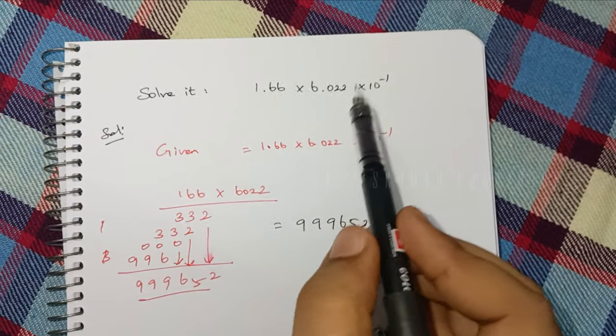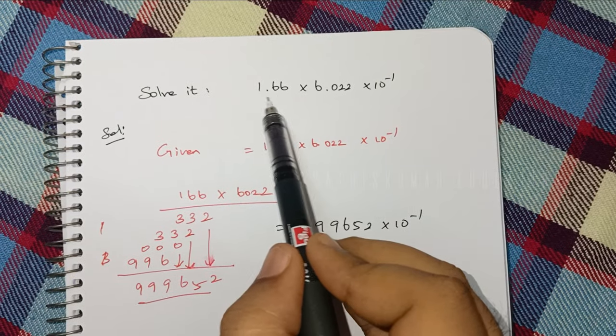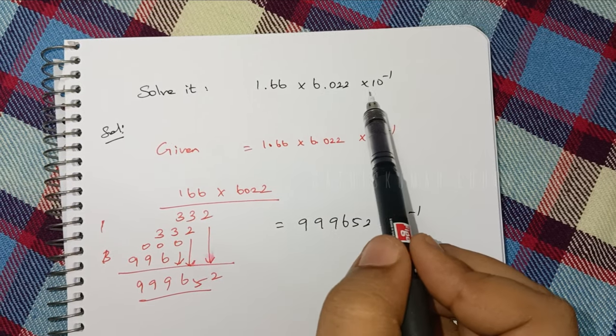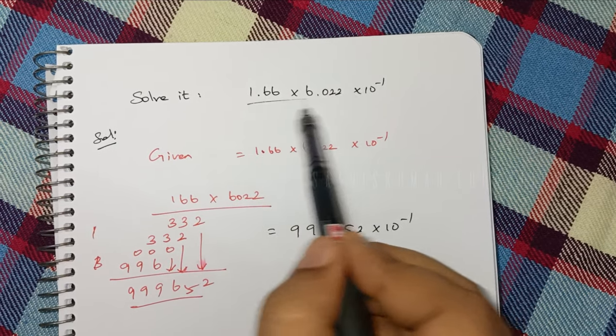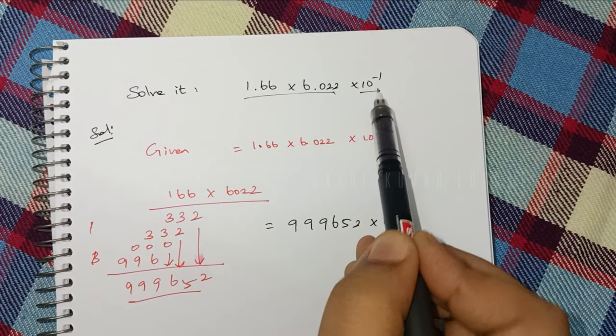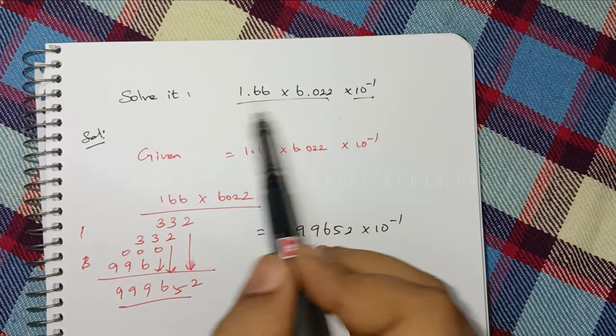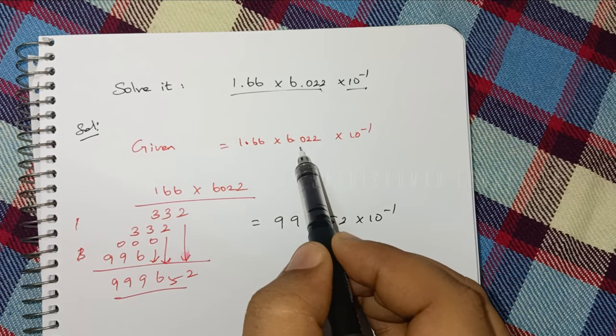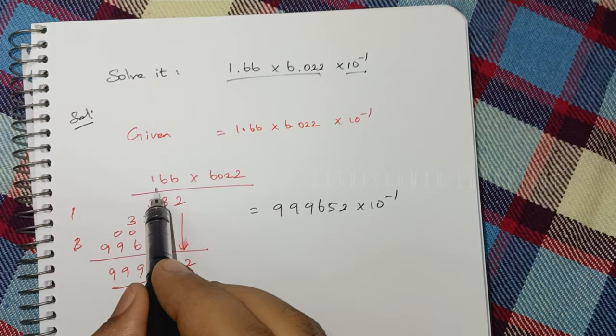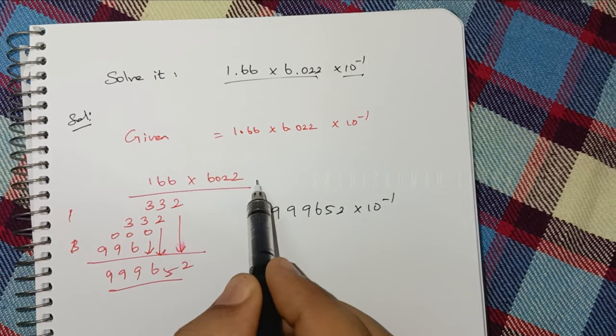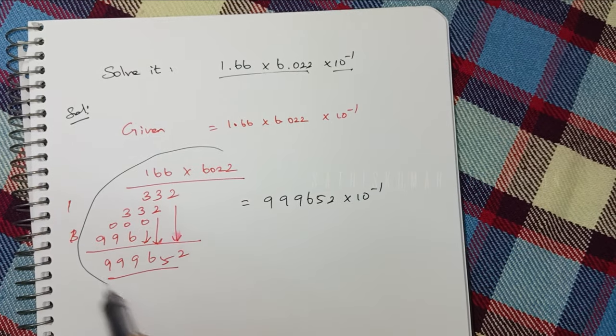The question is 1.66 into 6.022 into 10 power minus one. To multiply decimals, you can use whole numbers instead of decimals. 1.66 into 6.022 becomes 166 into 6022. This is a normal multiplication.